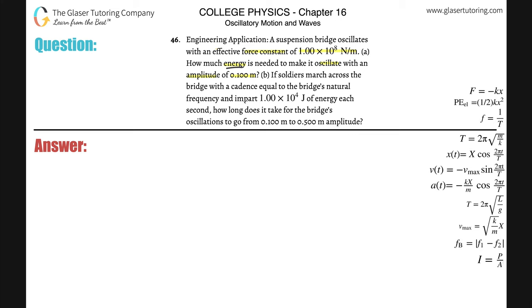How much energy is needed to make it oscillate with an amplitude of 0.1 meters? Alright, so it's asking for energy. We're talking about amplitudes of oscillations, so we know we can basically use the potential energy formula of a spring. The potential energy of a spring is going to be equal to 1 half kx squared - spring constant multiplied by the displacement from equilibrium, a.k.a. the amplitude.